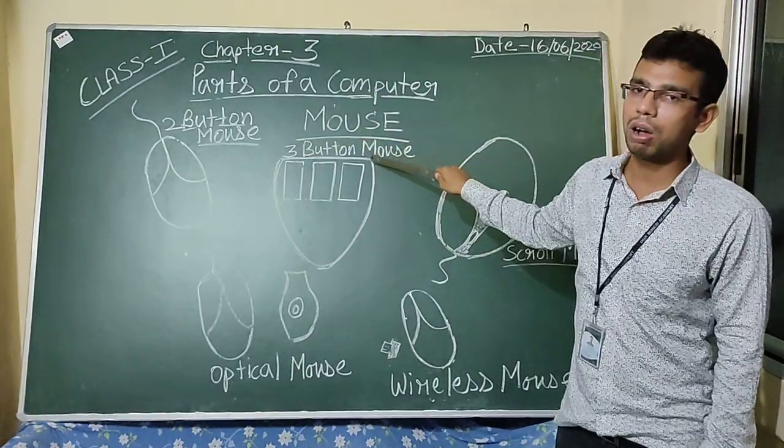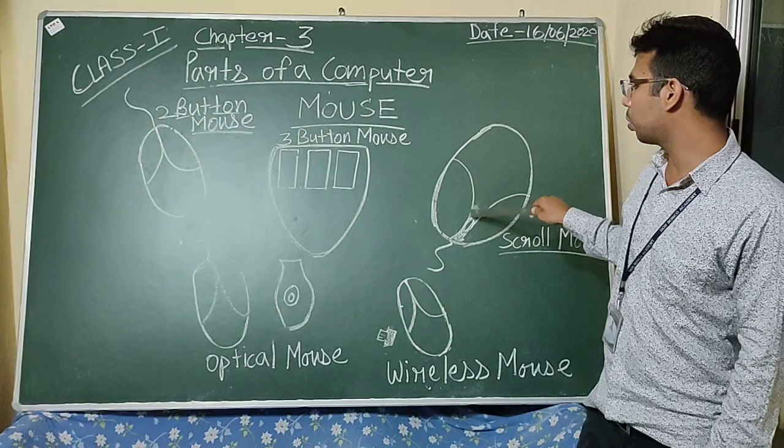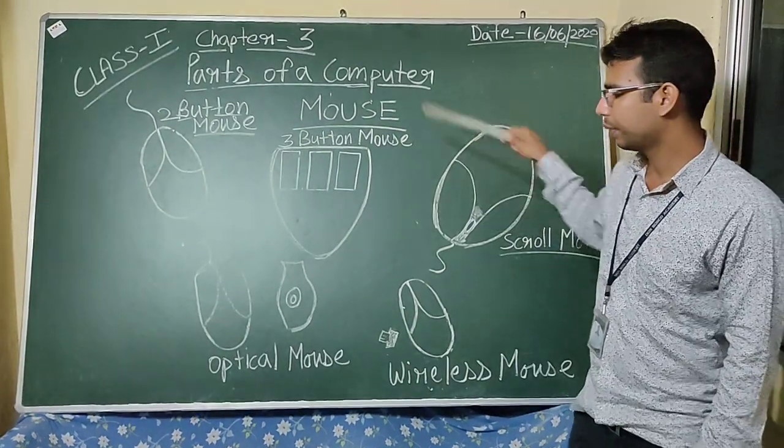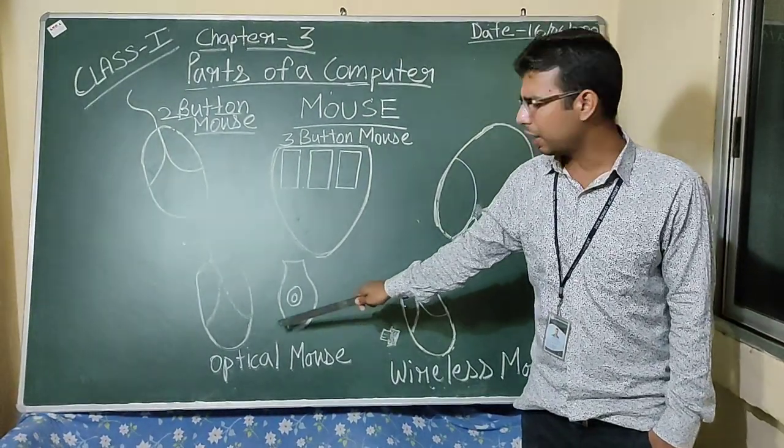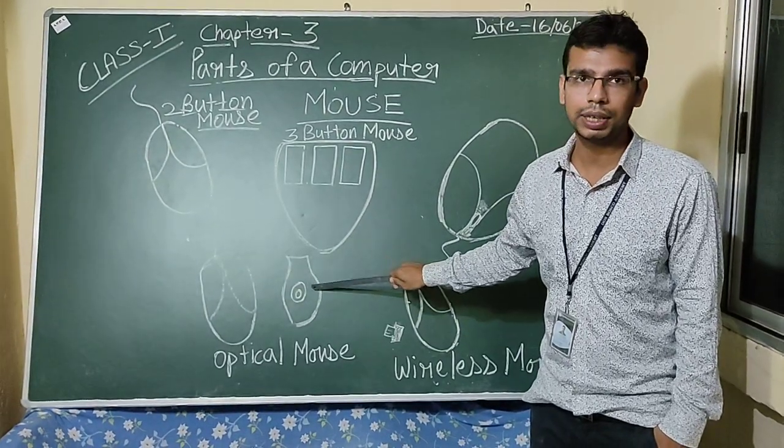3 button mouse has 3 buttons on it. Scroll mouse has a scroll wheel. Optical mouse has a light sensor on it. It works on light sensor.